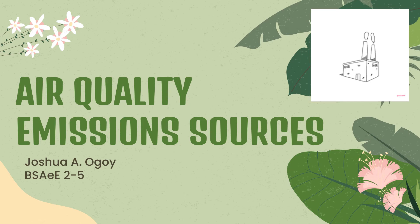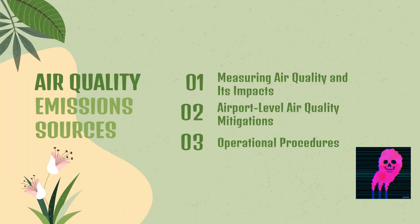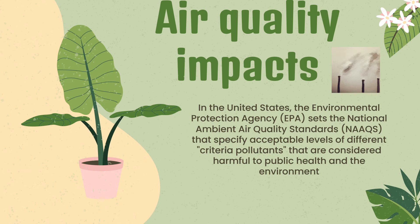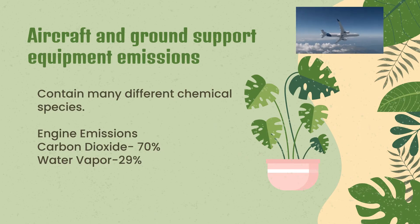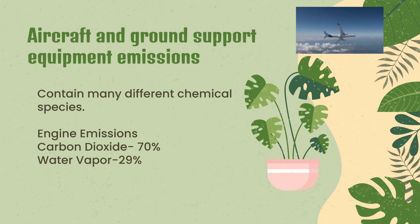The next topic is air quality emission sources. We will be discussing three subtopics: measuring air quality and its impacts, airport level air quality mitigations, and operational procedures. Aircraft and ground support equipment emissions contain many different chemical species. In engine emissions, 70% is carbon dioxide and 29% is water vapor. Carbon dioxide and water vapor are the largest components of engine emissions by mass, but they are not a concern from an air quality perspective.